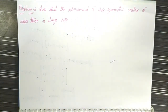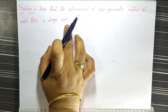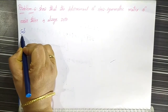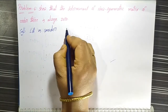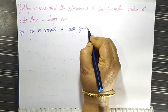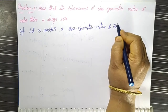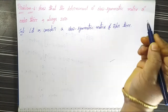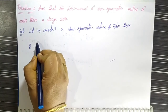That means the third order skew symmetric matrix determinant value is equal to zero. Let us assume one skew symmetric matrix and then find out that matrix's determinant, then we have to show that determinant value equals zero. Let us consider a skew symmetric matrix of order 3, that can be named as A.